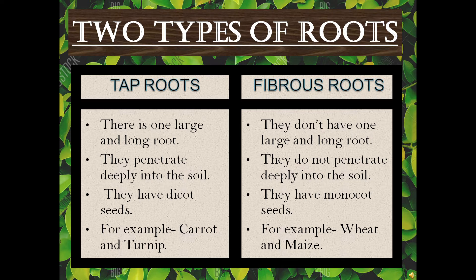Fibrous root: first, they don't have one large and long root; second, they do not penetrate deeply into the soil; third, they have monocot seeds. Examples are wheat and maize.